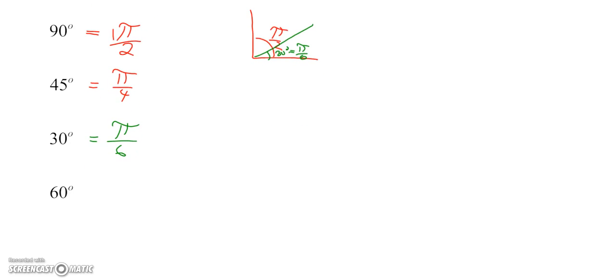And then the last one here, 60 degrees. What would that be equivalent to? Well, 60 degrees is twice as big as 30 degrees, so it would be twice as big as π over 6. So that would be 2π over 6, but you're never going to see it written as 2π over 6, because we are going to reduce our fractions and call it π over 3.